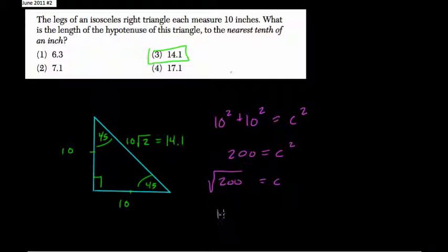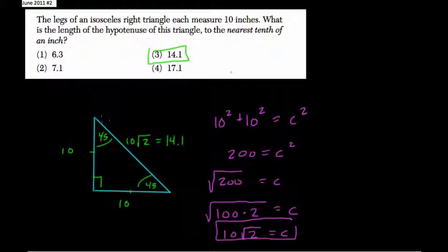200 really is the same thing, of course, as 100 times 2. And take the square root of that. What's the square root of 100? Well, that's 10. Square root of 2, just the square root of 2. And that's what c is equal to, which is exactly what we found. So here, we use the Pythagorean theorem or the special rules of this special right triangle.